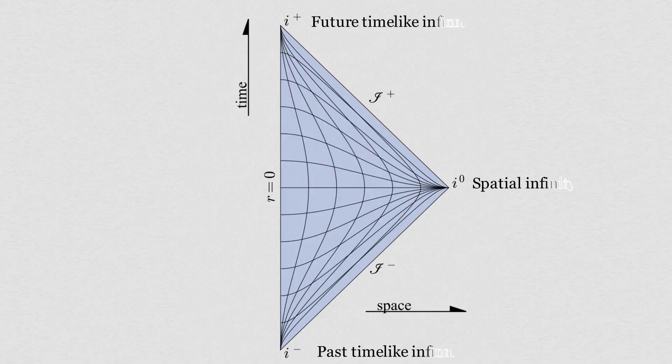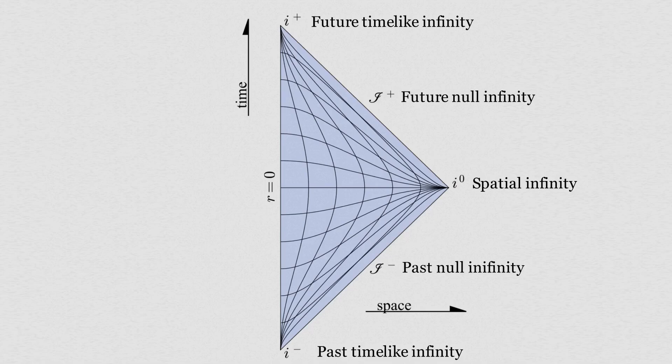After watching the last video on light cones, we should know a little about what these terms mean. Time-like geodesics begin at past time-like infinity and end at future time-like infinity. Null geodesics begin at past null infinity and end at future null infinity and space-like geodesics begin and end at spatial infinity.